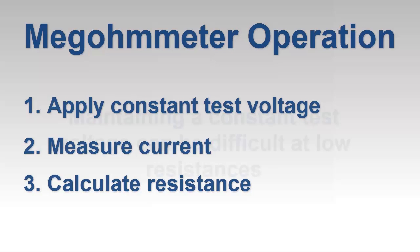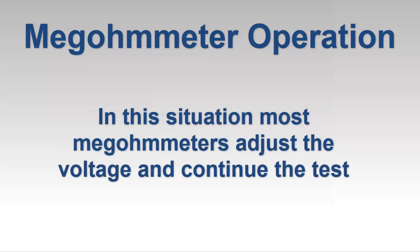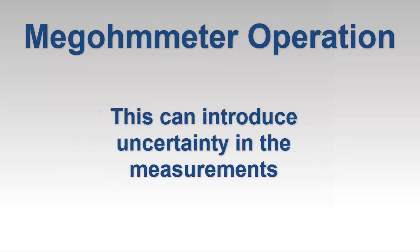Unfortunately, holding the voltage constant can be a challenge at lower resistances. To accommodate this, most megometers lower the voltage level in this situation and continue with the test. This may introduce a level of uncertainty into the data, since ideally all measurements within a test should be made at the same test voltage to ensure a true comparison amongst the readings.